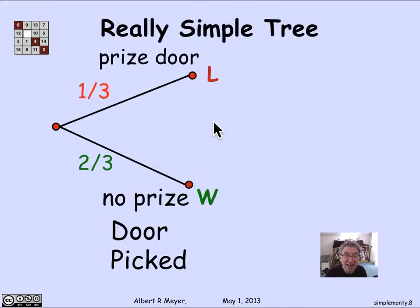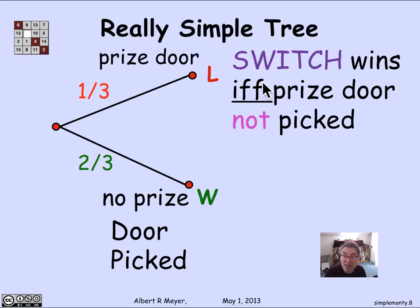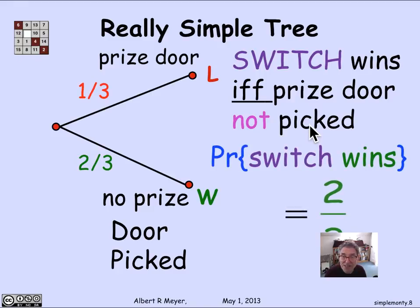And that is a really simple tree. What we can read off immediately is that with the switch strategy, the probability of winning is two thirds. The switch wins if and only if the prize door is not picked, so the probability that switch wins is two thirds — which is what we already figured out using the more complicated tree, but this way of getting at it is a lot clearer. The message here is that the tree you come up with to model experimental outcomes is really a modeling process, and there may be many models that work to capture a given scenario. It will often pay off to try to find a simpler tree to make the analysis simpler.